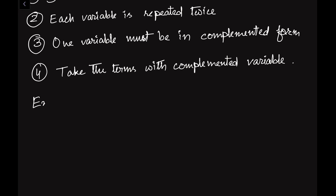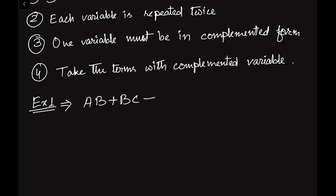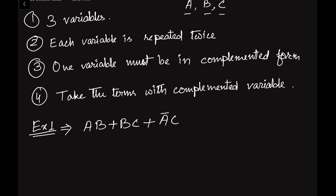Let us consider Example 1. Suppose we have the expression AB + BC + ĀC. We check the first three conditions. There are three variables: A, B, and C — first condition fulfilled. For the second condition, each variable is repeated twice. A appears in the first term and in complemented form in the third term. B appears in the first and second terms.